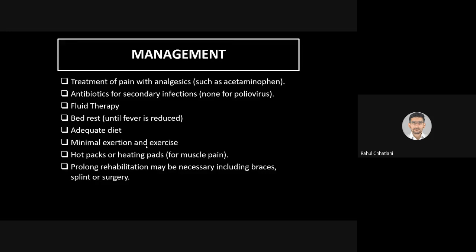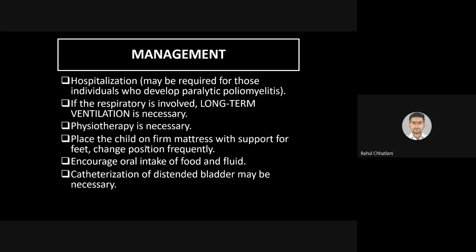Prolonged rehabilitation may be necessary, including braces, splints, or surgery, though chances are limited since paralyzed muscles represent a permanent loss. Patients may use walkers or crutches for mobility. Hospitalization is required for paralytic poliomyelitis — the third stage. If respiration is involved, long-term mechanical ventilation may be necessary, as poliomyelitis is a non-reversible condition.